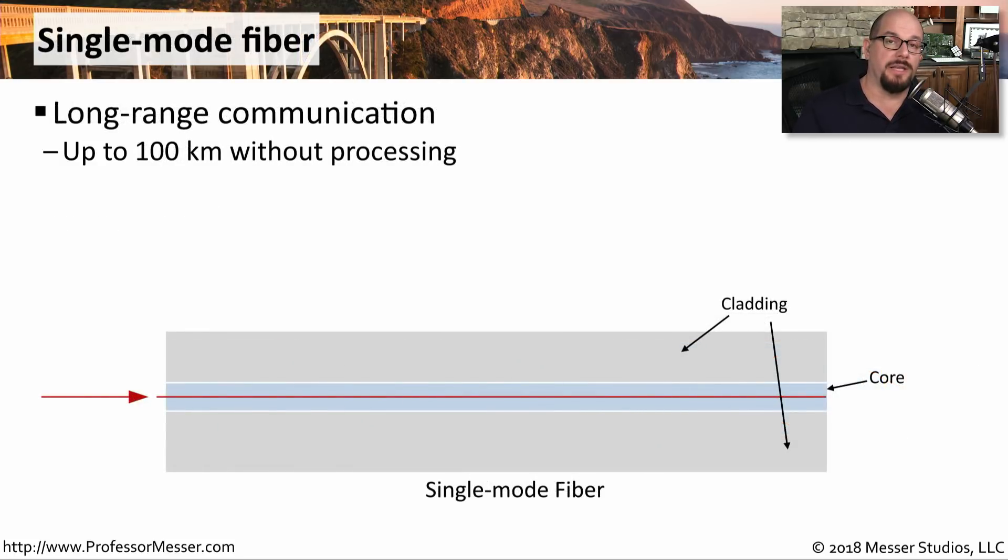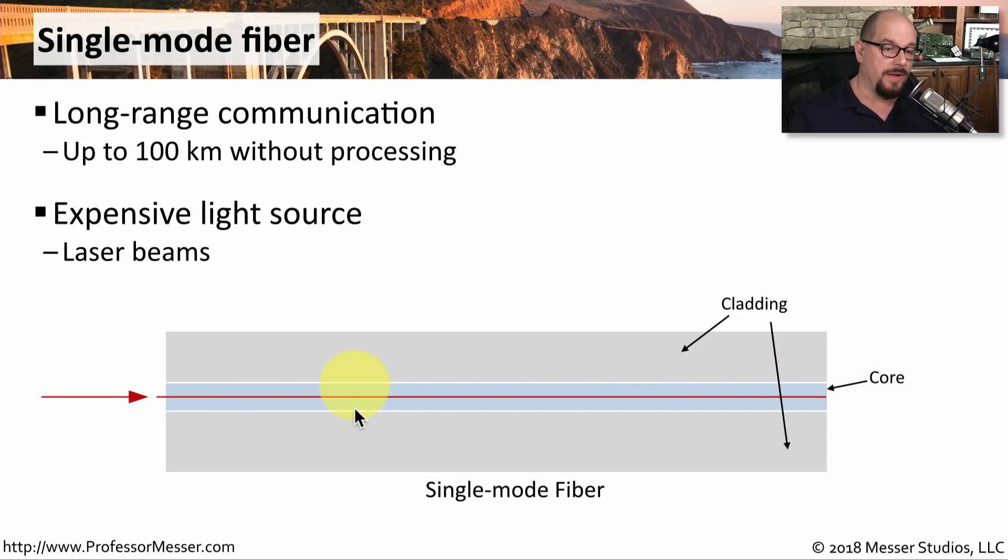Single-mode fiber is commonly used for much longer distances. With some single-mode fiber configurations, you can go up to 100 kilometers without having to reprocess that signal. However, this comes at a financial cost because we're using much more expensive light sources to be able to send that all the way down this single-mode fiber. The core of the single-mode fiber is much narrower than the multi-mode fiber, allowing us to send that single mode from one end to the other.